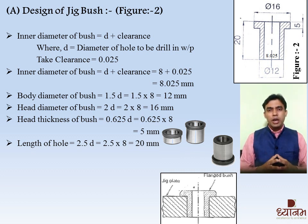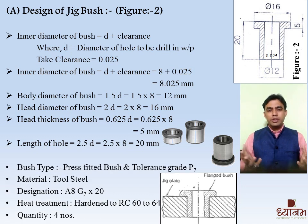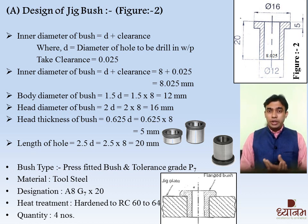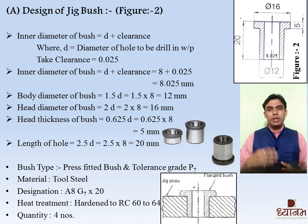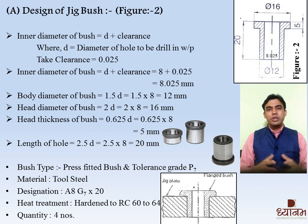The next is head diameter of bush. Here we are going to use specifically a headed bush, so the head diameter is equal to 2 × D and the answer is 16 mm, as shown in the figure. The next is head thickness, which is 0.625 × D and the answer is 5 mm — you can see the thickness of 5 mm for the headed bush in the figure. The last formula is length of bush: 2.5 × D and the answer is 20 mm. All dimensions are mentioned in figure number 2.